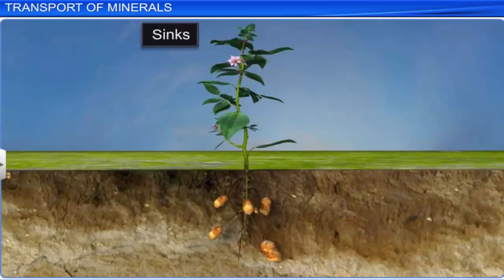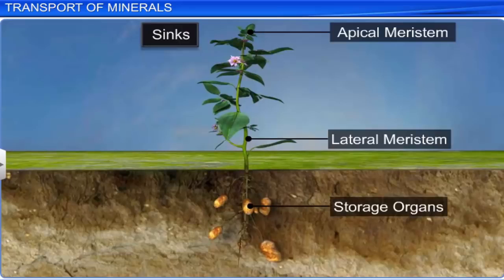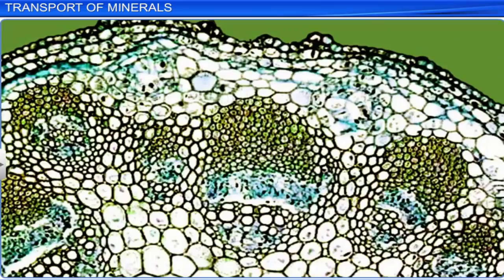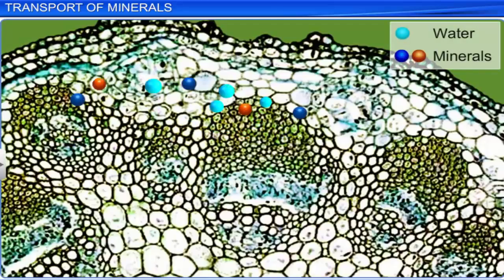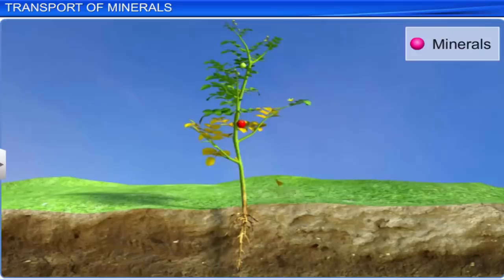The sinks inside plants are usually found in its growing regions like apical and lateral meristems, young leaves, developing fruit, flowers, and seeds, as well as storage organs. These mineral ions are unloaded at the fine vein endings of leaves through diffusion, and are taken up by active transport by associated cells such as mesophyll cells. Plants can also remobilize minerals from older dying parts to young developing parts where they are required.